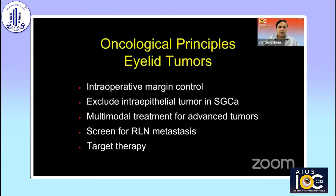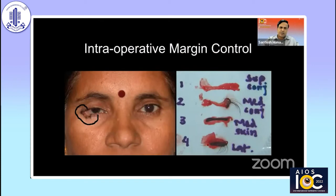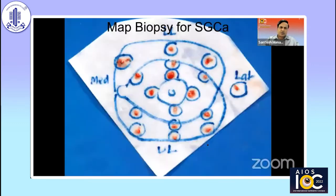For eyelid tumors, the oncological principles are intraoperative margin control and, for sebaceous gland carcinoma, exclusion of intraepithelial tumor by doing MAP biopsy. Multimodal treatment should be used in advanced tumors and we also have to screen for regional lymph node metastasis. There is a role for target therapy as well. In sebaceous gland carcinoma, it is important to mark the edges very carefully both on the skin side and on the conjunctival tarsal side, because the tarsal conjunctival component may be much larger than what is visible on the skin. Intraoperative margins are sent to the pathologist while the patient waits under anesthesia; once margins are received as negative, you proceed with reconstruction. In patients with sebaceous gland carcinoma, it is ideal to perform MAP biopsy from 17 sites, laid on a filter paper with each location marked, and sent to the pathologist to rule out pageoid invasion.